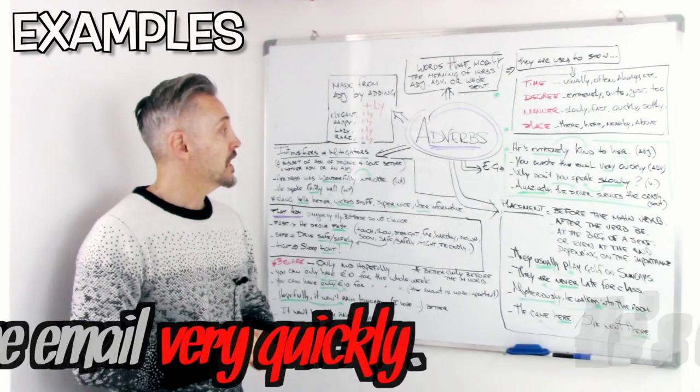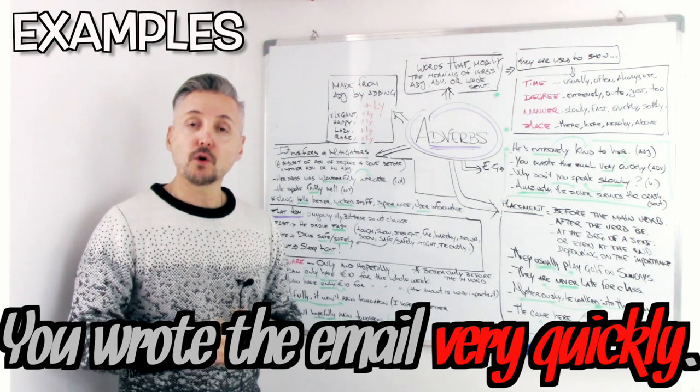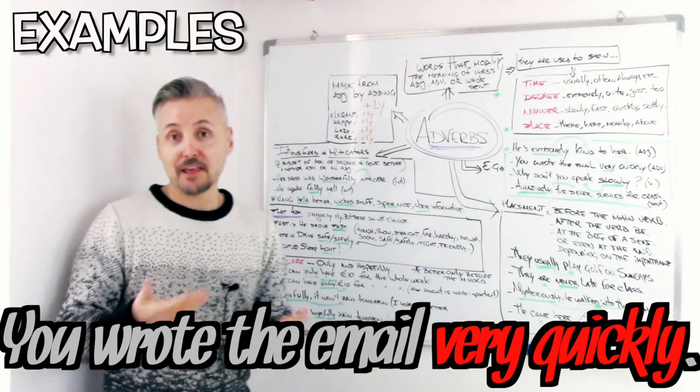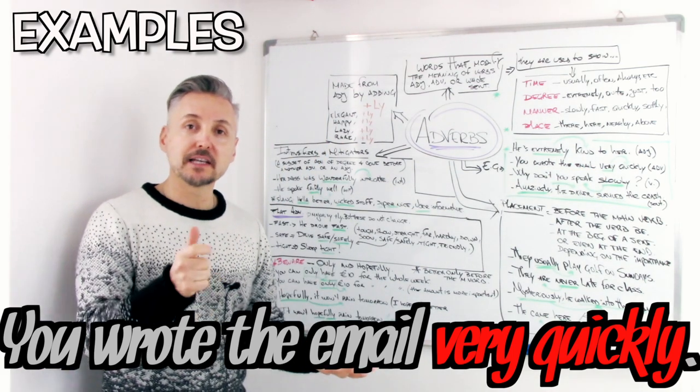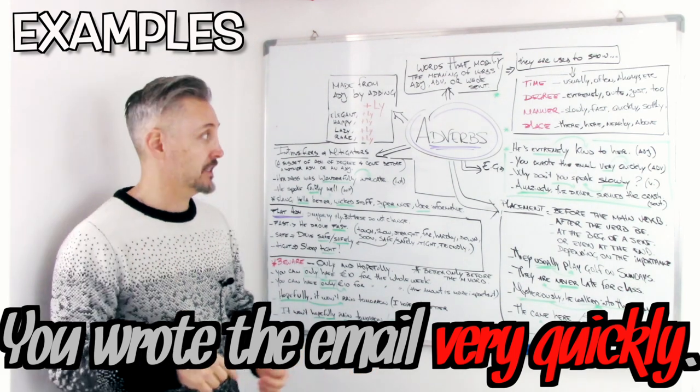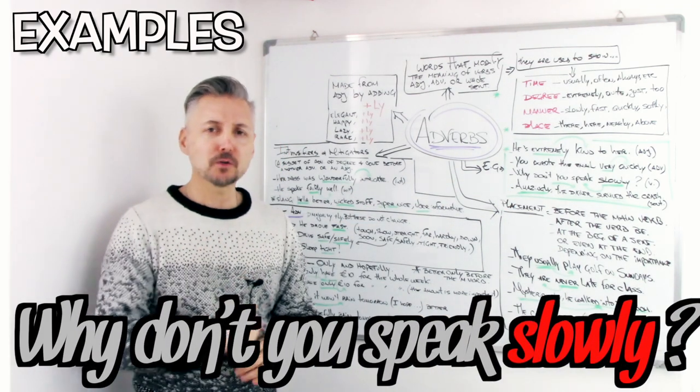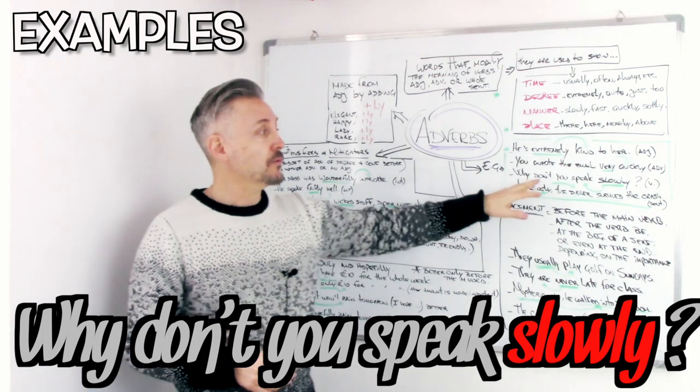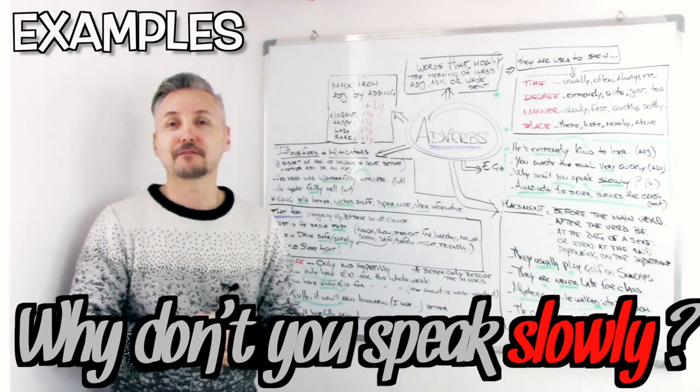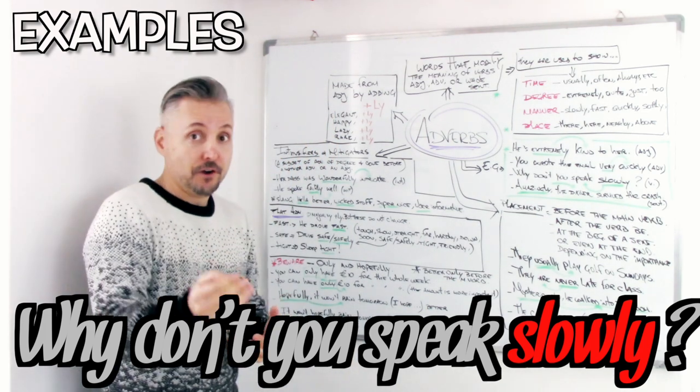Another example. You wrote the email very quickly. Quickly here is, yes, an adverb. And very is the adverb too. It modifies quickly. Very quickly. Let's take a look at another example. Why don't you speak slowly? Here we have slowly as the adverb. It modifies what? Yes, the verb, speak. Why don't you speak slowly? It goes after the verb.